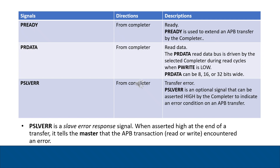PREADY is generated from the completer. When PREADY is high, it means the peripheral is ready for the transfer. The next signal is PRDATA — the read data signal. When PWRITE is low, a read transfer is happening, and PRDATA is driven by the selected completer during the read cycle. Finally, PSLVERR is generated from the completer and indicates that there was an error during the transfer — for example, a failed write or a read from an invalid address.